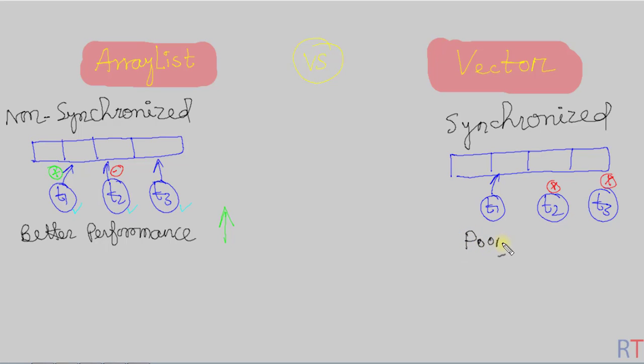But Vector gives poor performance because only one thread can have access to the vector and all the others are barred from having access to the vector. This reduces overall system performance.